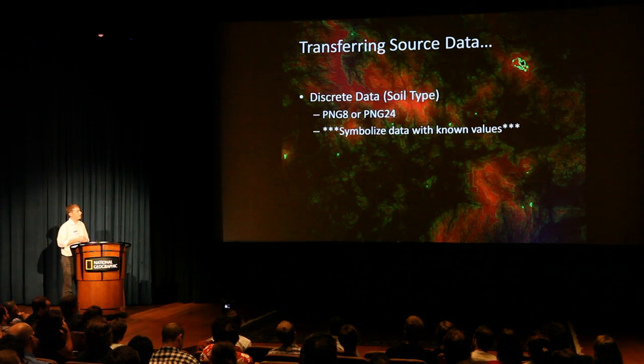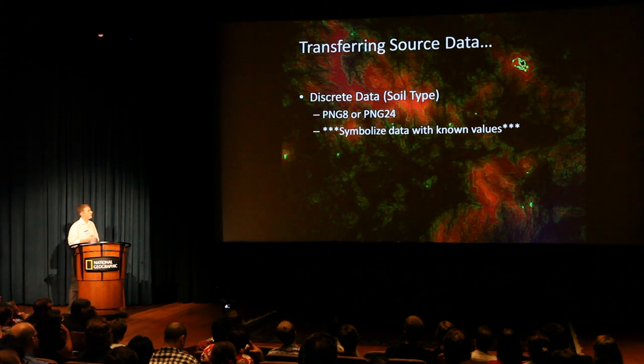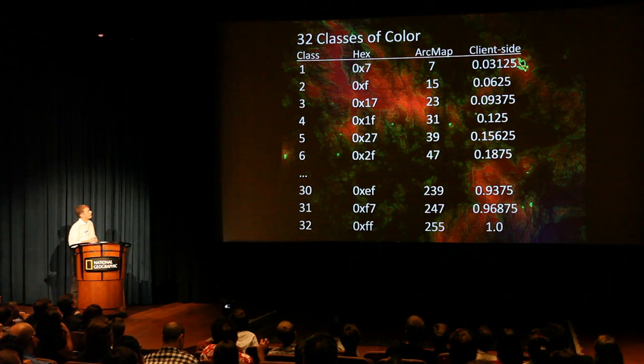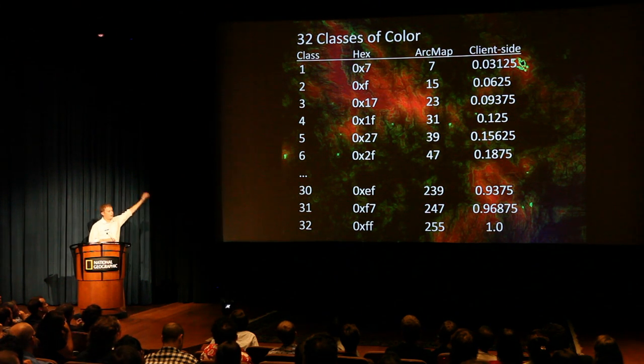You want to stretch it from black to white. For discrete data you want to use PNG8 or PNG24, and you need to know the values of the colors assigned to these discrete classes beforehand, because once it gets to the client you have no idea what the values were — you have to translate them again. So if you had 32 classes in a raster, you'd take 32 equal intervals of gray.